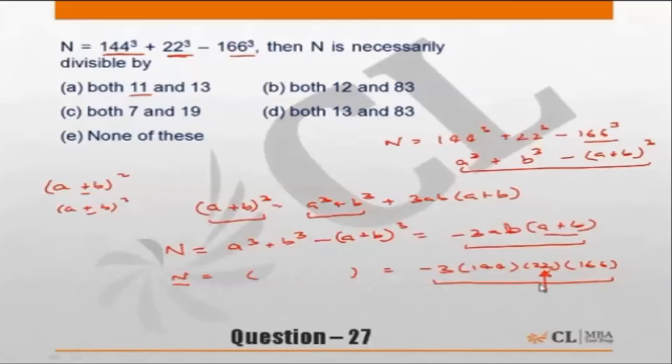Let's check the other number along with it which is 13. 13 is not a factor of 144, not of 22, not of 166. So 13 cannot be the answer. So choice A is incorrect, which also means any choice which has got 13 has to be incorrect. That means choice D is also incorrect.